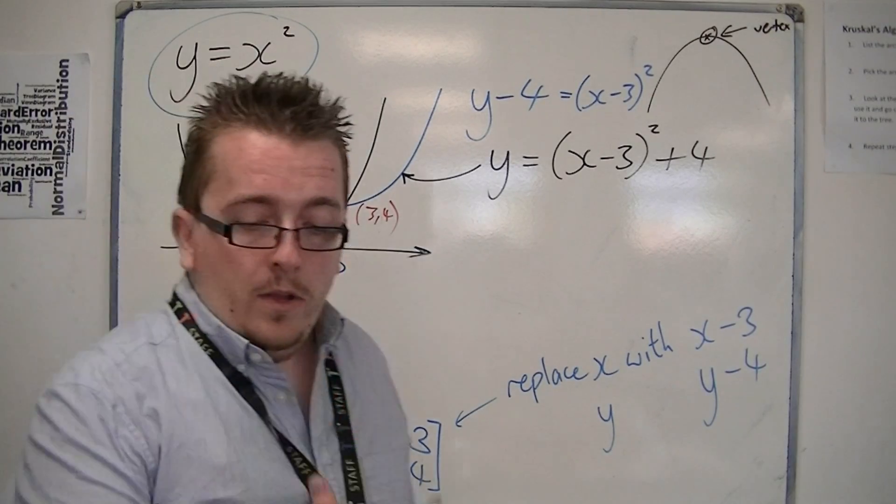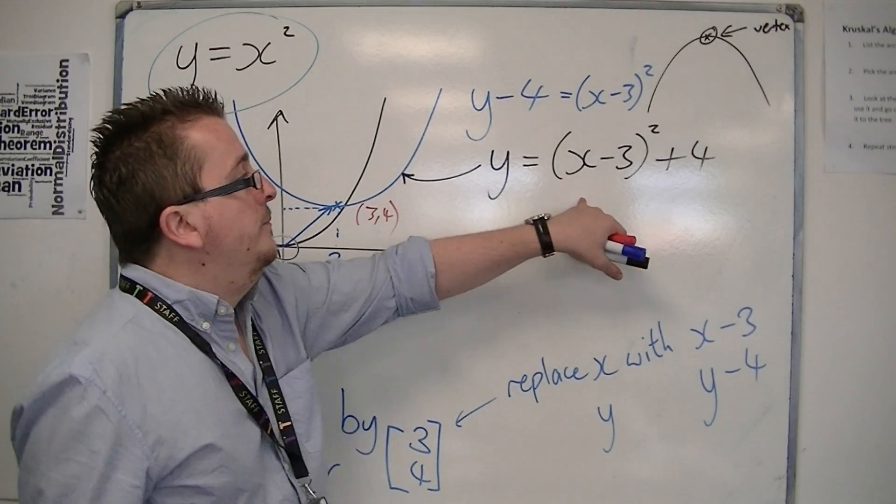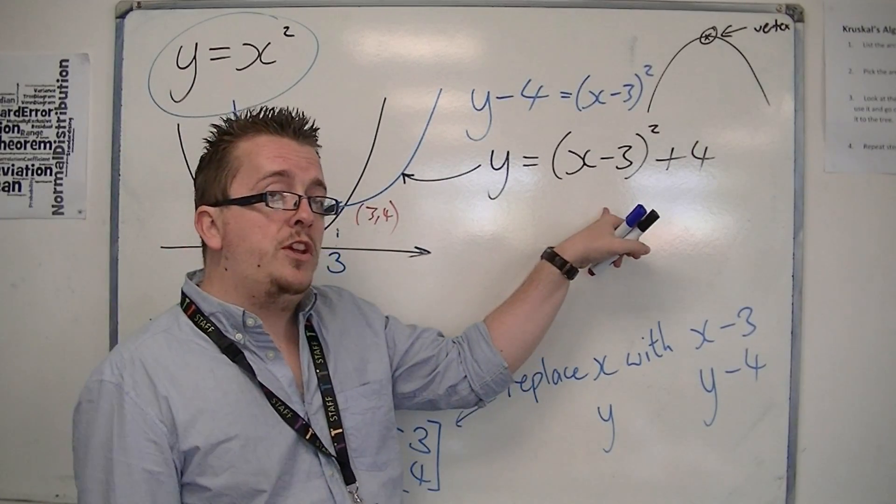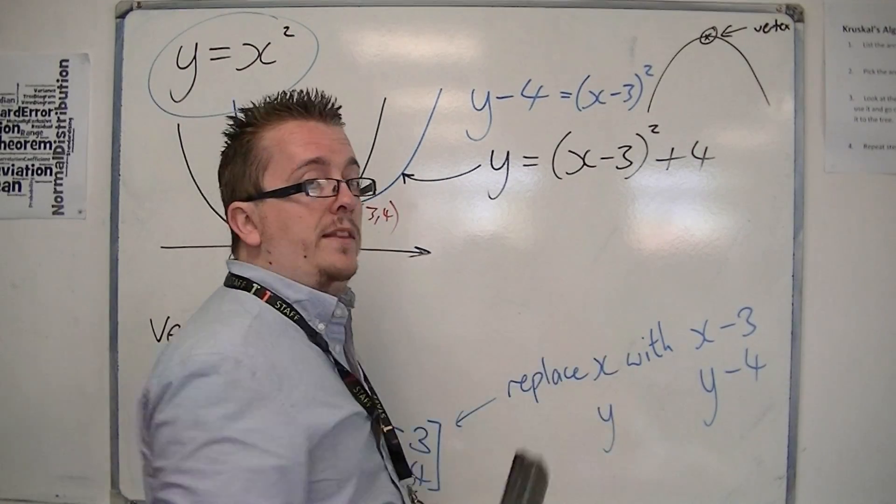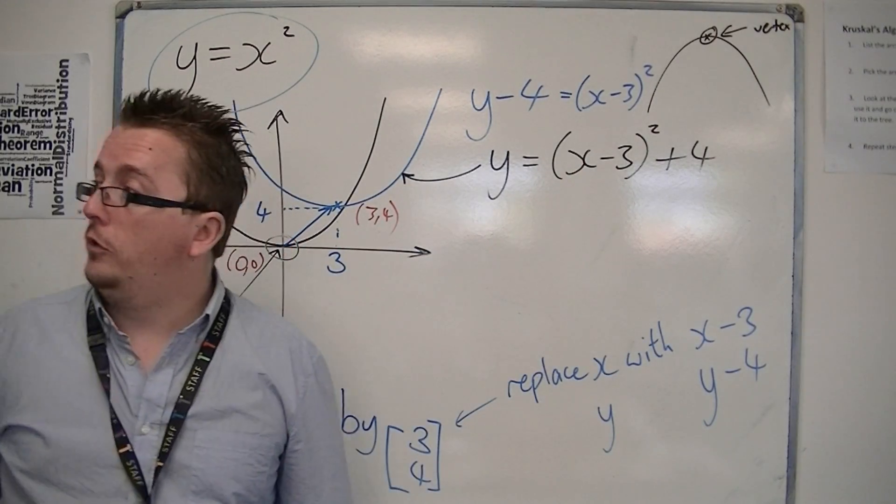So that is how you use this translation. And this is now in what we call completed square form. You will have learnt at GCSE how to complete the square and get it into a format that looks like this. This is what we refer to as completed square form.